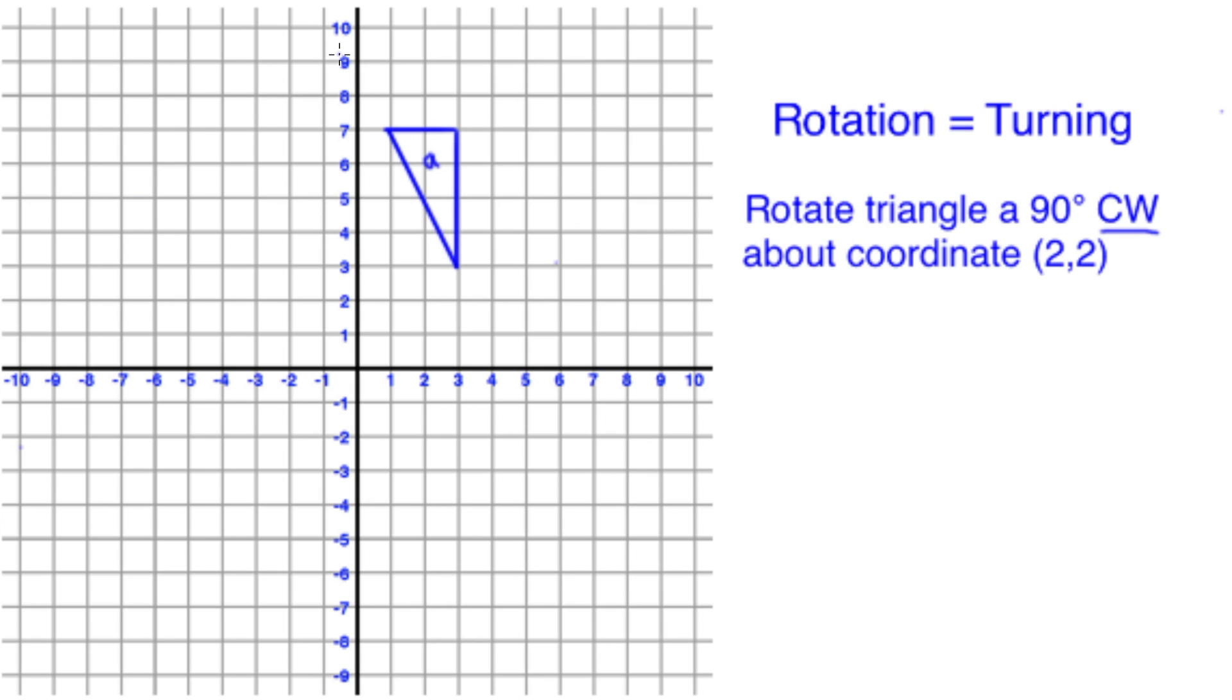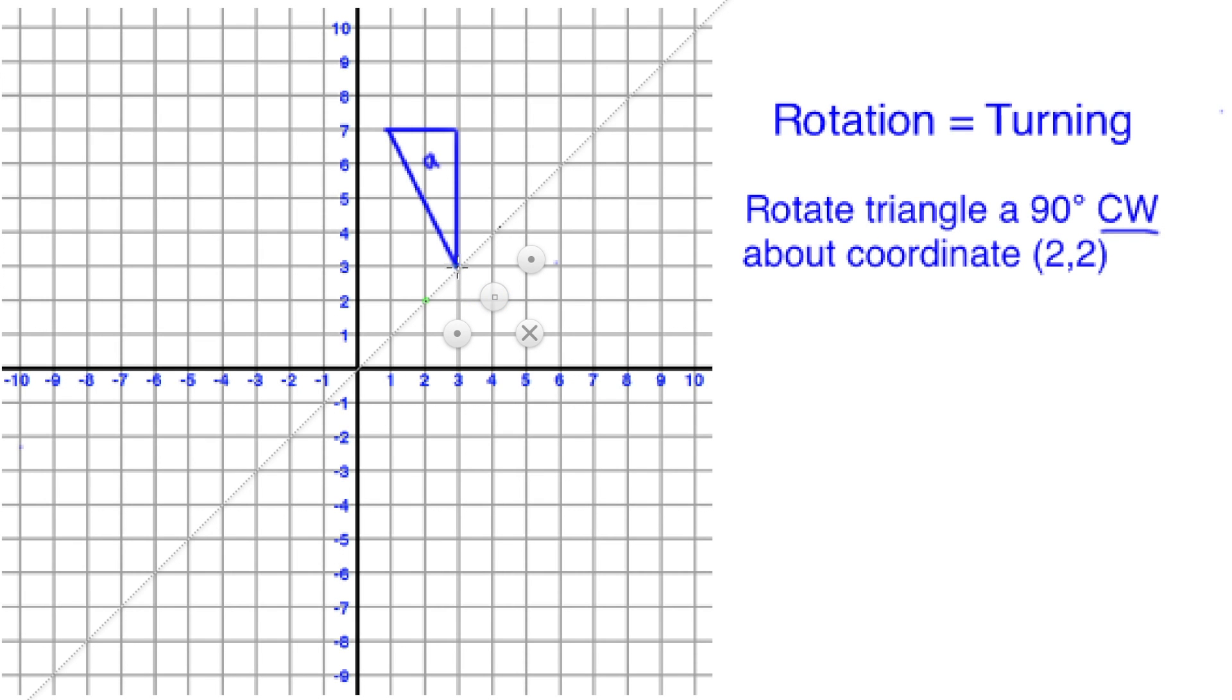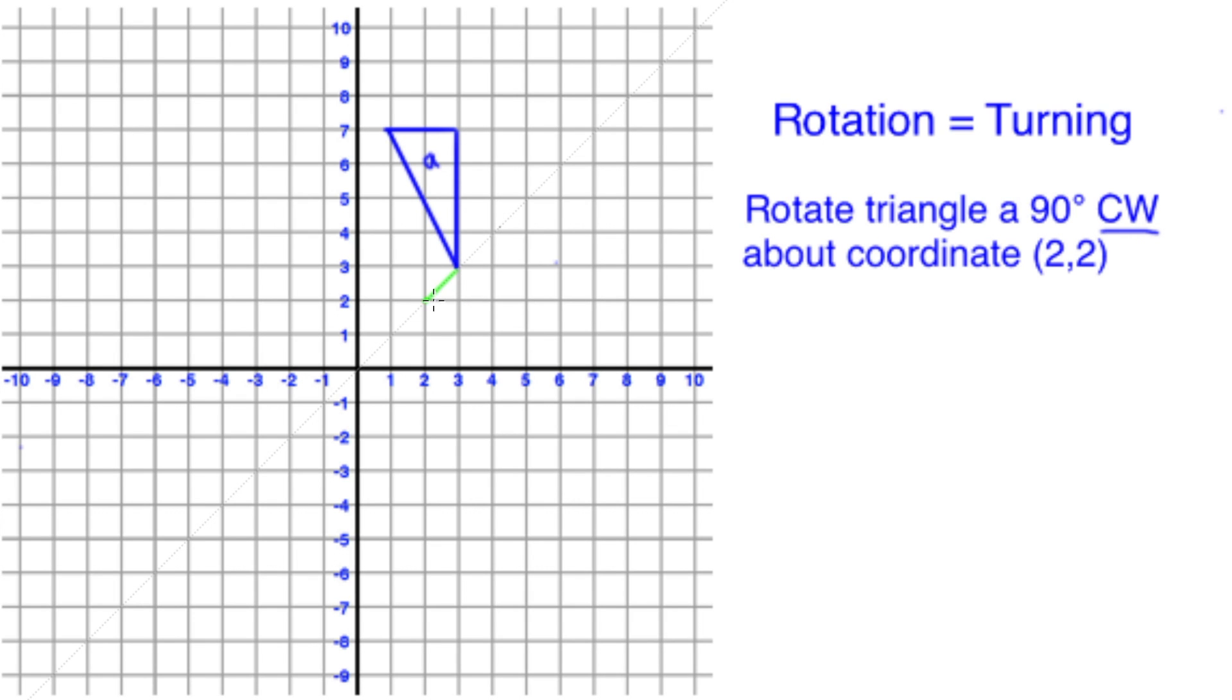Now, we've been given the point 2, 2, so remember, along the x-axis first, and then up, and we'll mark the point here. We can draw a line from our closest corner point to our marked coordinate, although any point will work using this method.